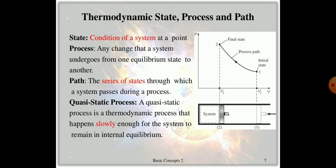Now we consider state, process, and path — the considerable points in thermodynamics. The state is the condition of the system at a point. A process is any change that the system undergoes from one equilibrium state to another. The path is the series of states through which the system passes during the process.